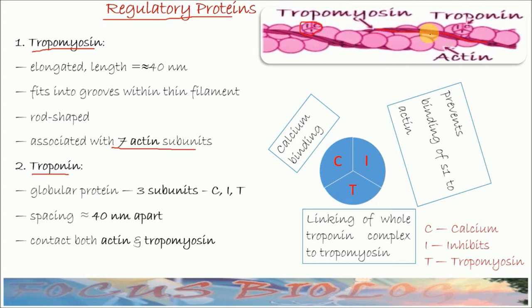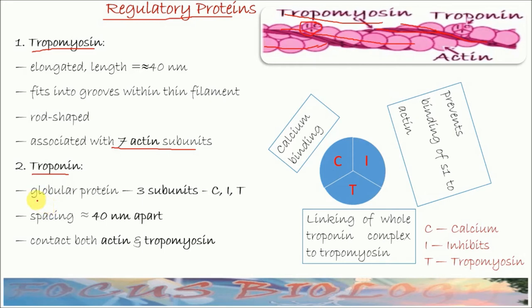Tropomyosin fits in the groove of the actin filament. As we know, the two actin filaments are twisted around each other, and during the twisting a groove forms between them. You can see here — this is one actin filament and this is the other actin filament, and this is the groove between them. In this groove, tropomyosin remains associated. It is a rod-like structure.